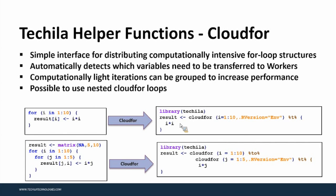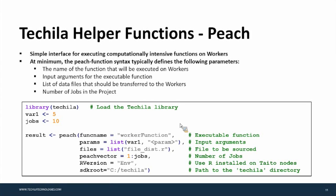Another helper function is called PEACH — an acronym for Parallel EATS. PEACH is a simple interface for executing computationally intensive functions on workers, typically with different input arguments, essentially for parameter sweep type operations. At minimum, you want to define the function name, input arguments for the executable function, and optionally a list of data files to transfer to the Tequila environment from your computer. You also define the number of jobs in the project.